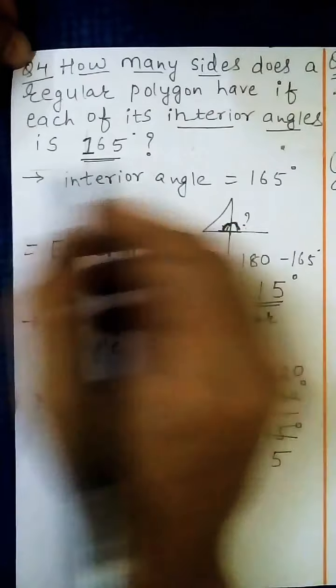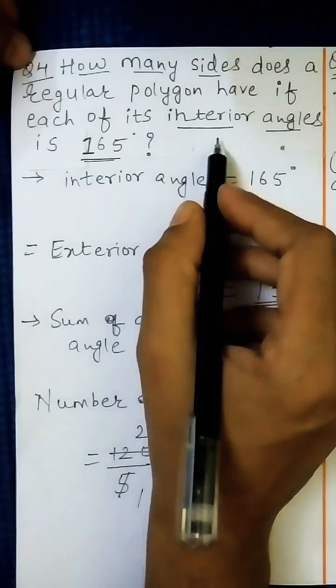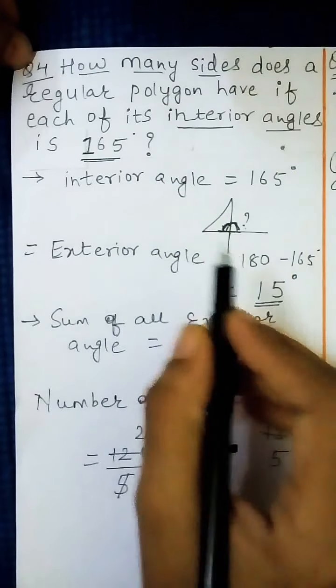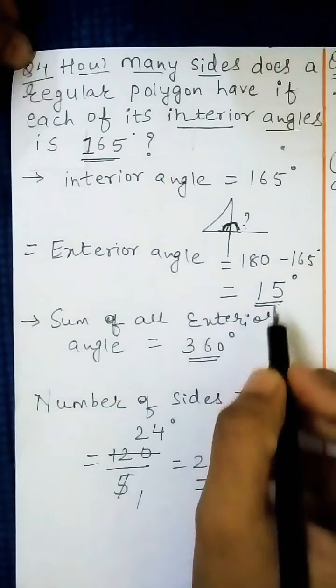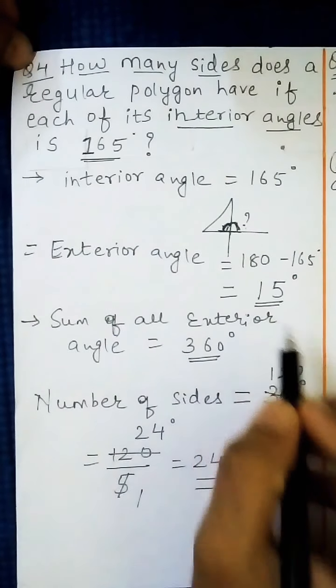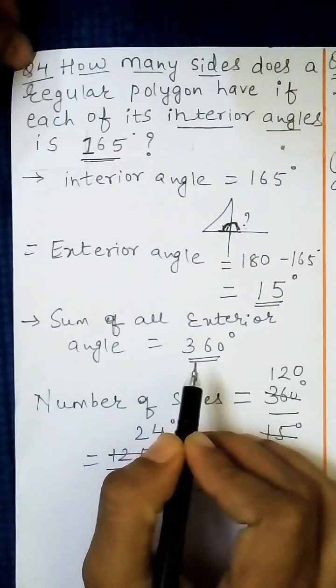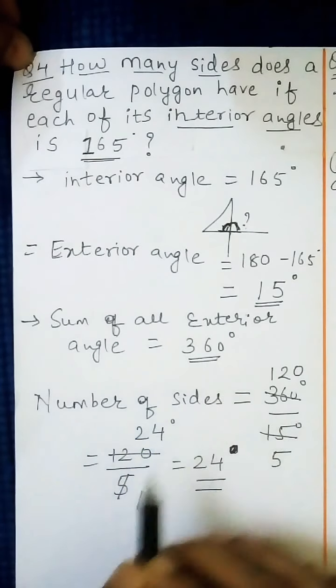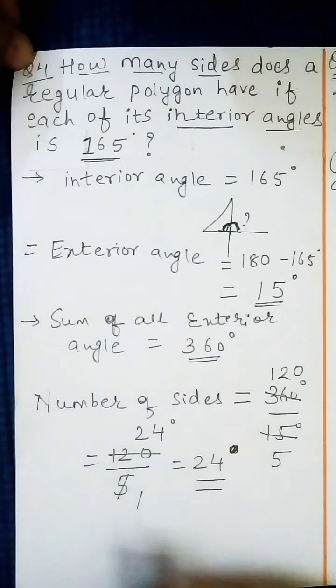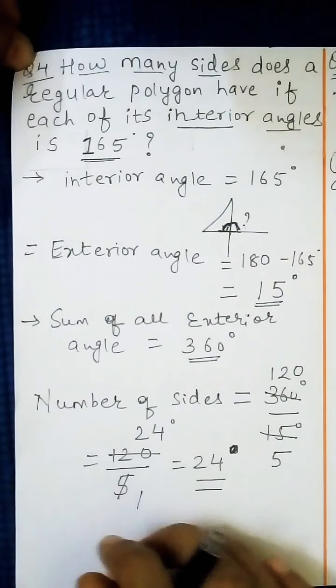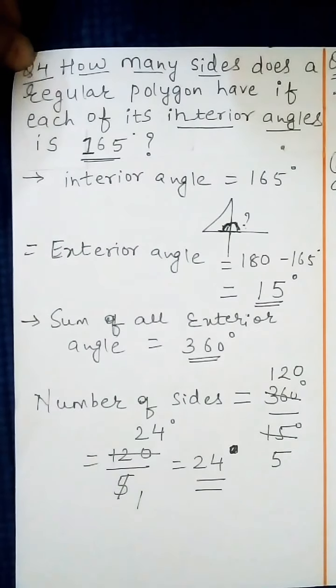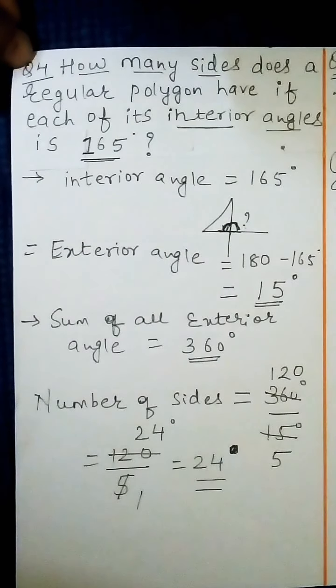So whenever the interior angle is given, first find the exterior angle, and then with the help of the sum of all exterior angles formula, you can get the number of sides by applying the same formula.